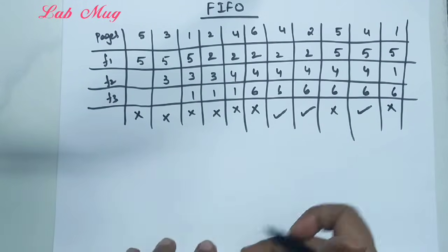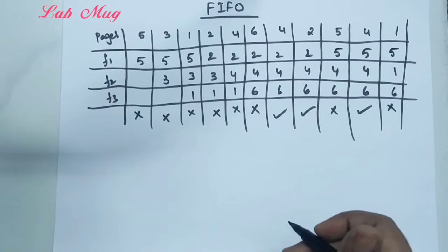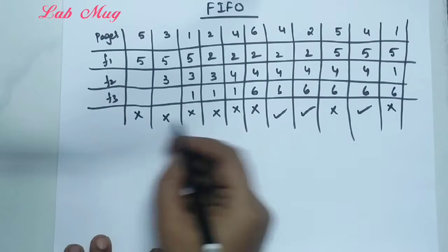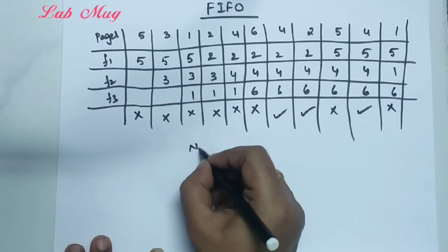So all the pages have been processed. Now we need to calculate the hit ratio. First, we calculate the number of faults.